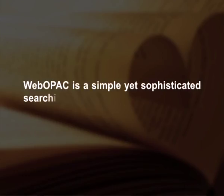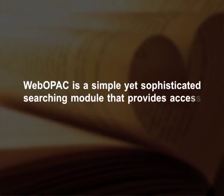Recent developments in ICT have enabled libraries to publish their catalogs on the web, making them accessible locally on-site or remotely through the web as a Web OPAC. Web OPAC is a simple yet sophisticated searching module that provides access to OPAC over the network. It is a gateway to resources not only held by the respective library but also to the holdings of other libraries, without limiting to local collection but going beyond to regional, national and international levels.